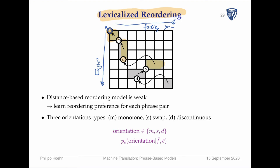This is called discontinuous — D. Then we basically jump back. We could call this also discontinuous, but in this case we actually call it a swap — a special case. This is because we end at the point where the previous phrase started.